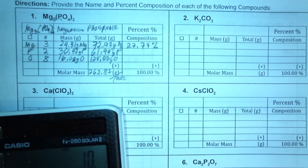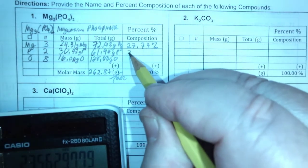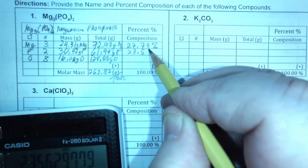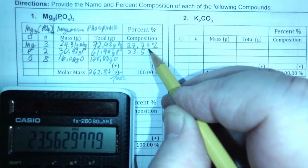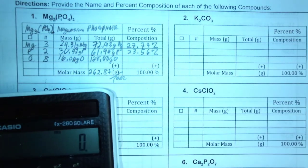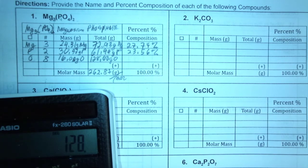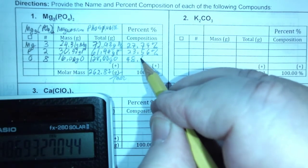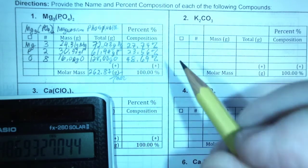Times 100. 23.56 percent. Okay. And then 128 divided by times 100. 48 point.